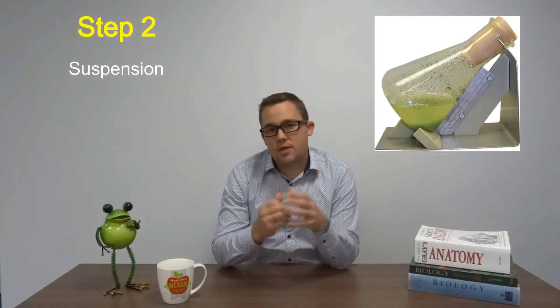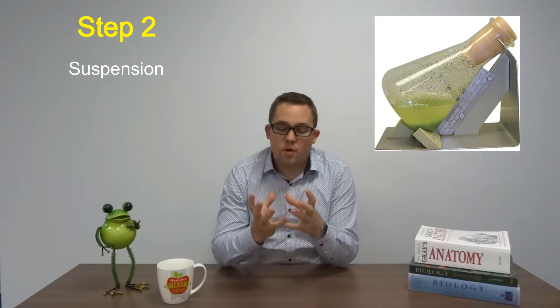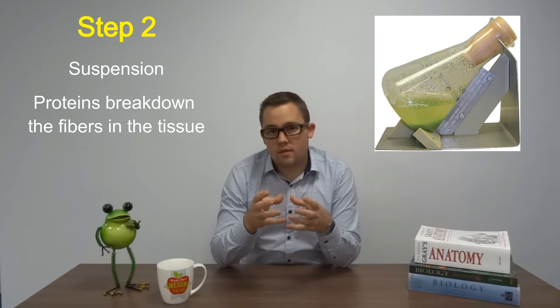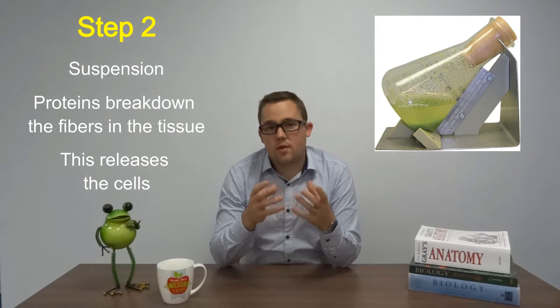Once you've dissected the tissue, the second stage is to place that tissue into a suspension medium of protein digesting enzymes. Those protein digesting enzymes in the suspension medium are going to break down all the protein fibers that are holding the cells in place and release them so that you can culture them.